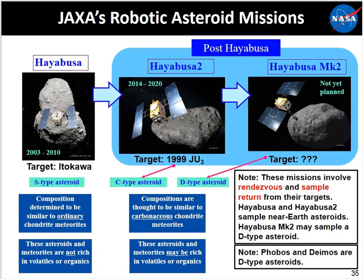Let's talk about JAXA's robotic missions to asteroids. JAXA is the Japanese Aerospace Exploration Agency. They did the first Hayabusa mission to asteroid Itokawa — the mission ran from 2003 to 2010 — targeting an S-type asteroid similar to ordinary chondrite meteorites. Hayabusa 2 was launched in December 2014 and will return samples from asteroid 1999 JU3 in 2020. It's going to a C-type asteroid — a carbonaceous chondrite-type — thought to be full of volatiles, organic matter, and possibly lots of water.